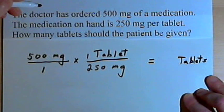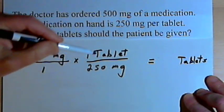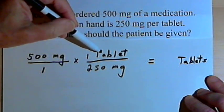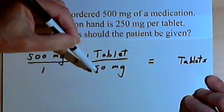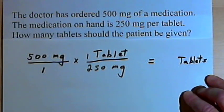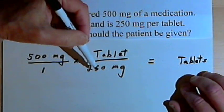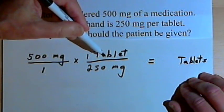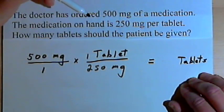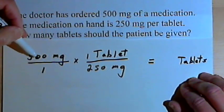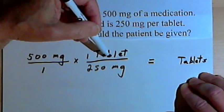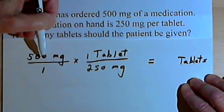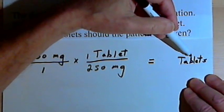Let's do a quick fraction review so we understand what's going on here. If you have a fraction where the numerator and the denominator — the top number and the bottom number — are the same, then that fraction equals 1. Since 250 milligrams is the same as one tablet, this fraction I just wrote equals 1. And when we multiply anything by 1, it doesn't really change it — we're just going to change the units we're using.